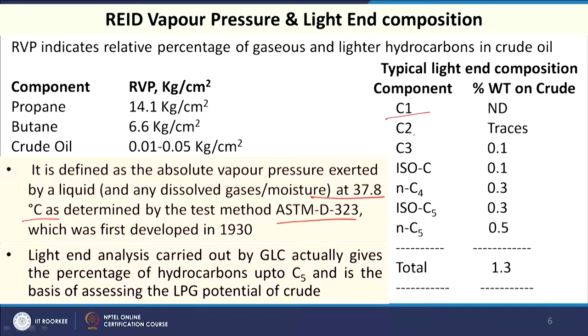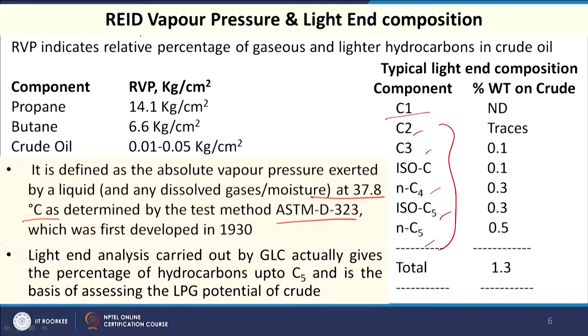In petroleum crude we get C2 to C80 or more, with C1 being very less. The C2, C3, C4, C5 fractions produce LPG, so how much LPG we can get from that crude is indicated by the Reid vapor pressure. For propane, vapor pressure is 14.1 kg/cm²; for butane it is 6.6 kg/cm²; whereas for crude oil it is 0.01 to 0.05 kg/cm².